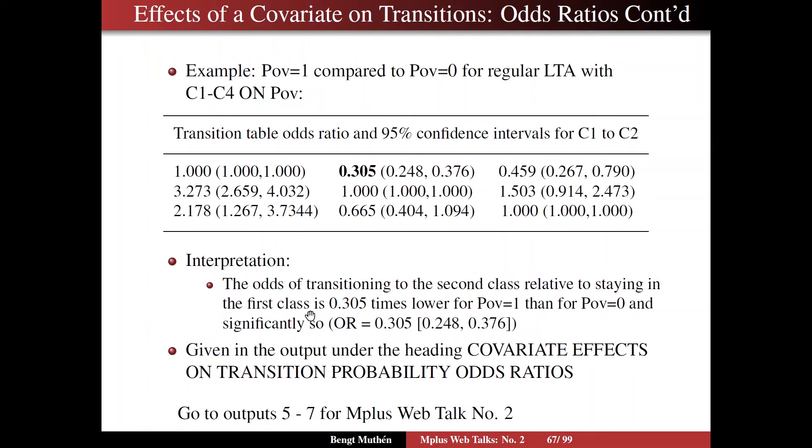So we're saying that the odds is 0.305 lower, the odds ratio is 0.305, significantly less than 1, and this is transitioning from C1 to C2. So the odds of transitioning to the second class, which you want to see between fall kindergarten and spring kindergarten, that odds is much lower for children from poverty households than for non-poverty households. So that makes substantive sense.